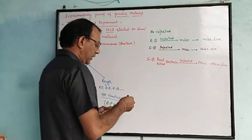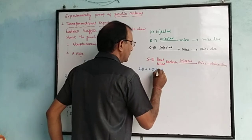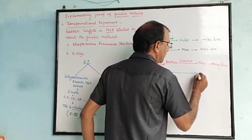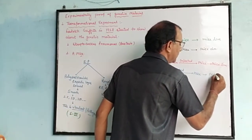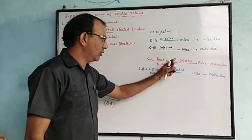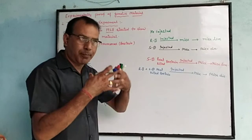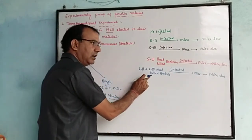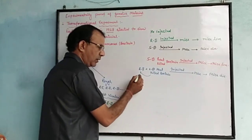He again experimented. He took normal R2 bacteria combined with S3 heat-killed bacteria and injected the mixture into the mice. Normally R2 alone — mice live; S3 heat-killed alone — mice also live. But when both R2 normal and S3 heat-killed bacteria are combined and injected into the mice, the mice died. He concluded that something in S3 changed R2 into a virulent form, and that substance is responsible for genetic material.